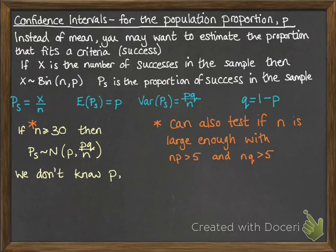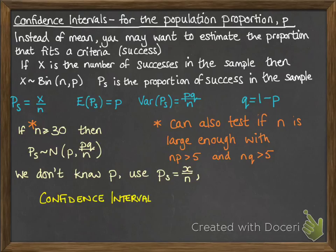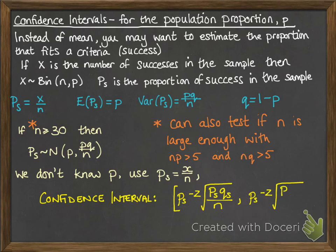Now we don't actually know what P is. The whole point of this was getting a confidence interval for our population proportion P. So we use the proportion taken from the sample, X over N. Our confidence interval then looks like this: PS is the proportion from our sample — the proportion of successes — and then it's plus or minus our Z value, which you're used to doing now from your previous confidence intervals, and then the square root of the variance.